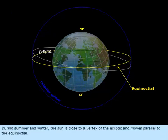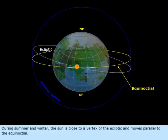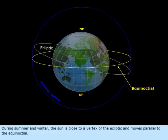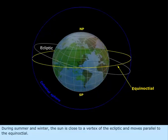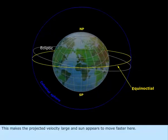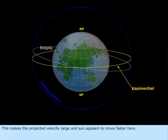During summer and winter, the Sun is close to a vertex of the ecliptic and moves parallel to the equinoctial. This makes the projected velocity large, and Sun appears to move faster here.